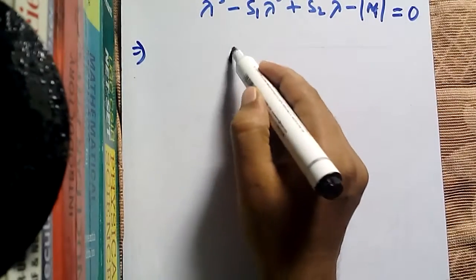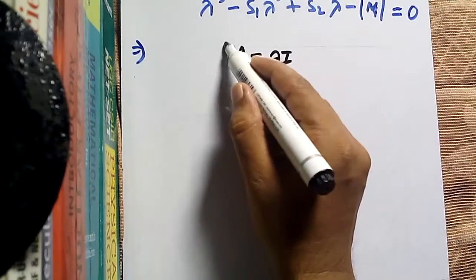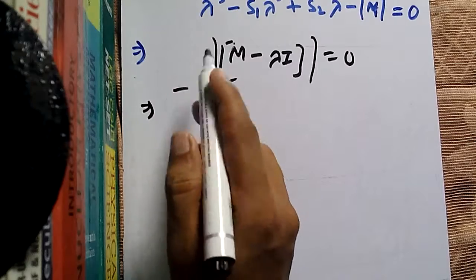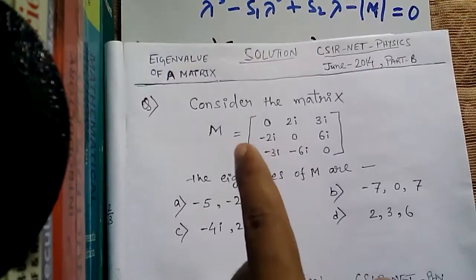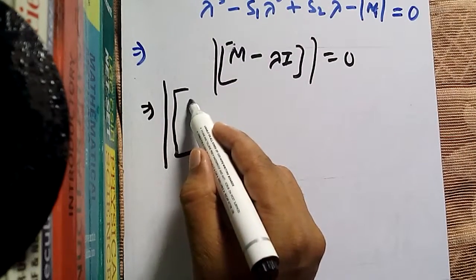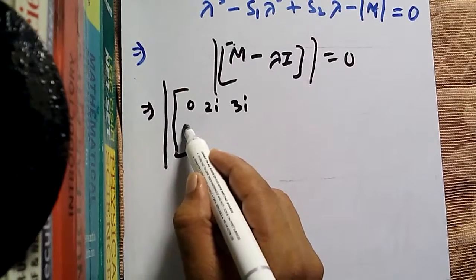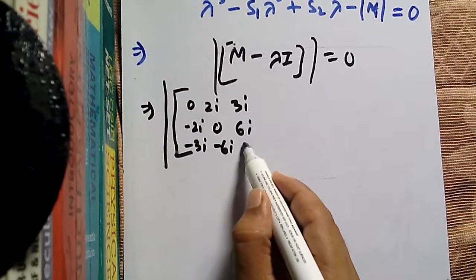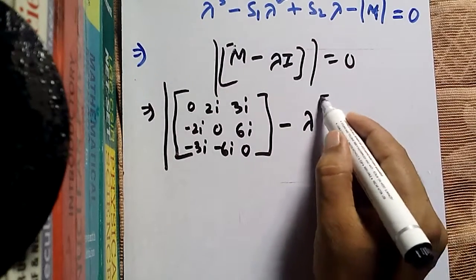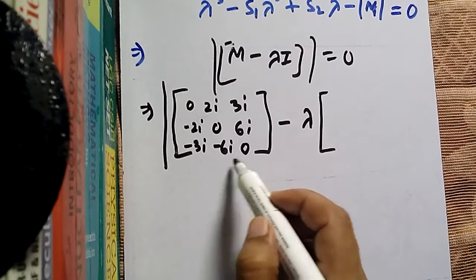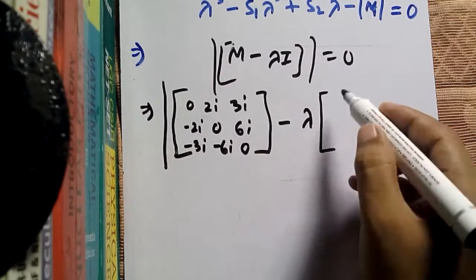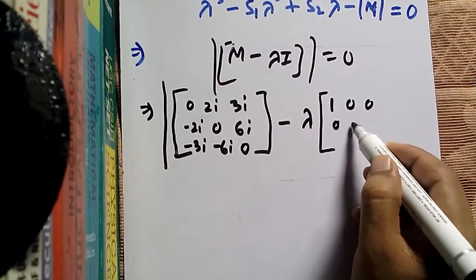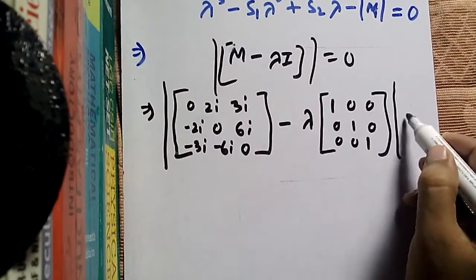The characteristic equation is determinant of (M minus lambda I) equals zero. Matrix M is: [0, 2i, 3i; -2i, 0, 6i; -3i, -6i, 0]. The identity matrix, also 3x3, has diagonal elements 1 and zeros elsewhere: [1, 0, 0; 0, 1, 0; 0, 0, 1]. So we compute the determinant of (M minus lambda I) equals zero.